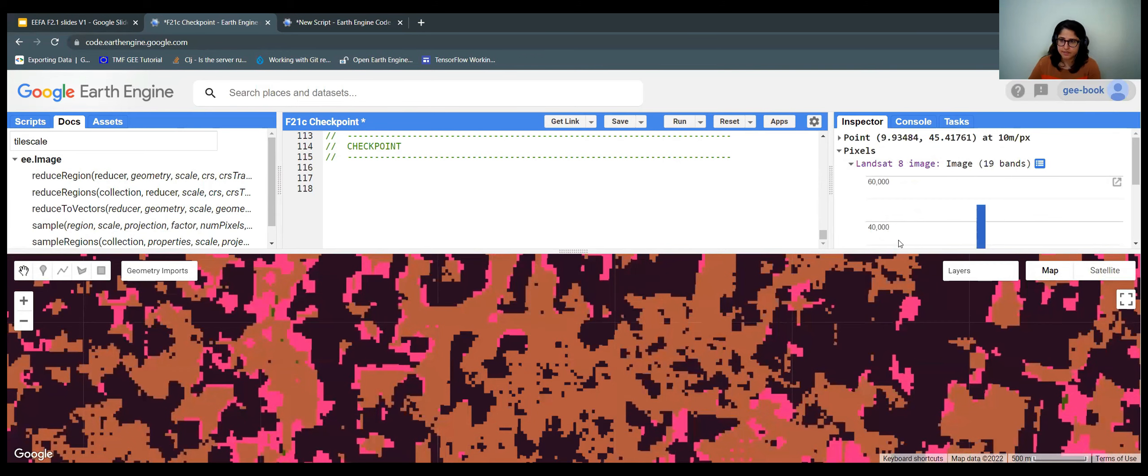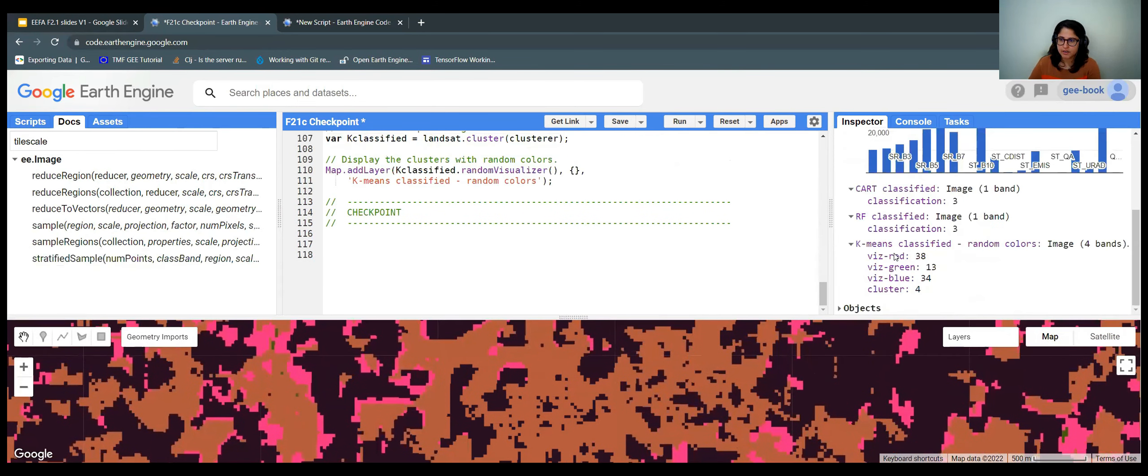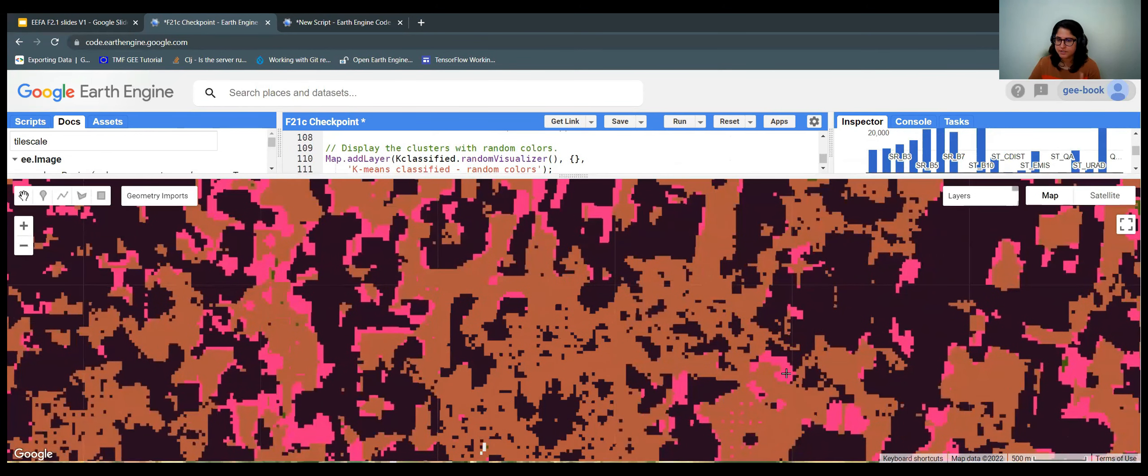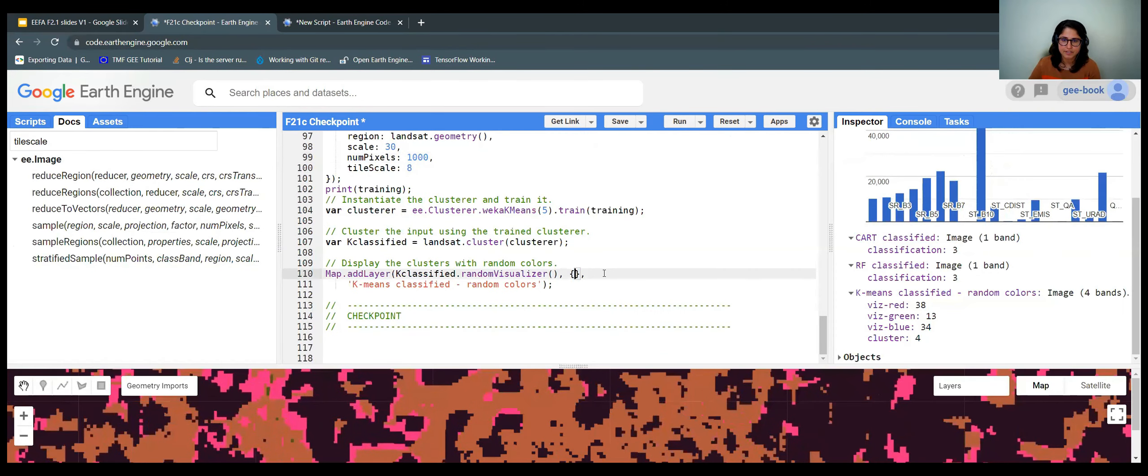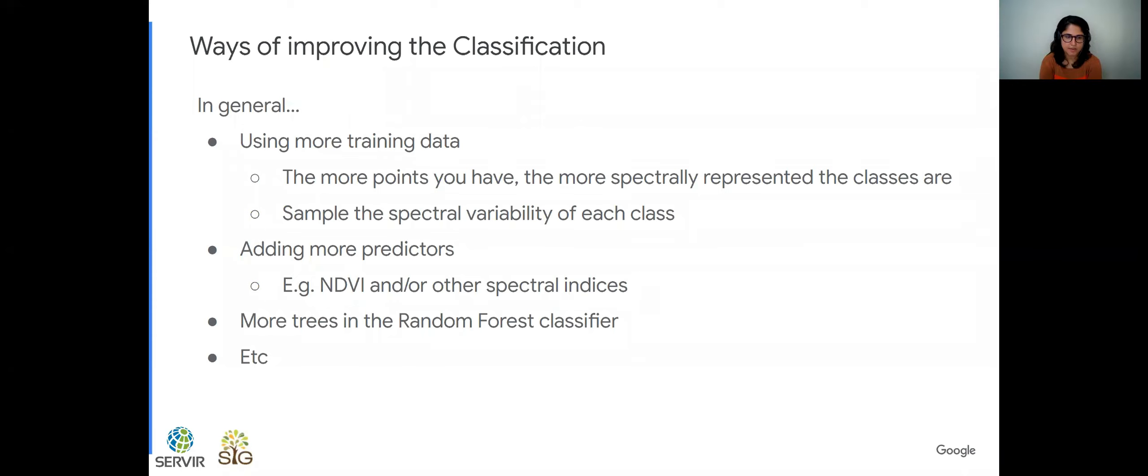I could also check the black color. It has number four. And so on. And then we define visualization parameters that make sense. So we've talked about supervised and unsupervised classification. Next week we'll be talking about how to assess the accuracy of these classifications and showing some ways of improving the classification.